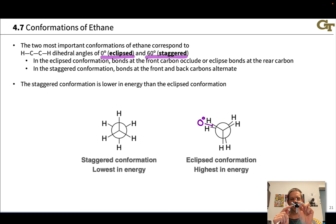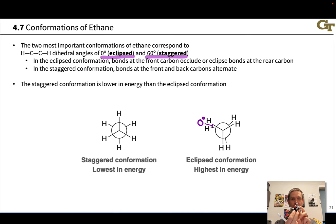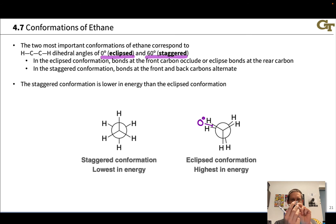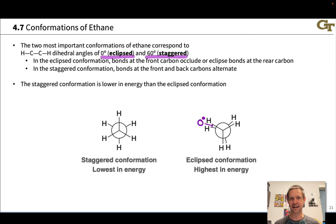Then we have the staggered conformation with a 60-degree dihedral angle, where the front and back C-H bonds are perfectly alternating — front, back, front, back, front, back. 60 degrees is the ideal angle where a back C-H bond perfectly bisects the angle formed by two front C-H bonds. Any movement in one direction or another changes the dihedral angle and moves a back C-H bond closer to one of the front C-H bonds. So the staggered conformation at 60 degrees is the energy minimum — it's as far apart as we can get those C-H bonds.